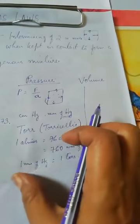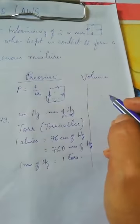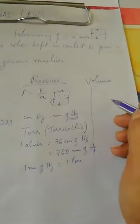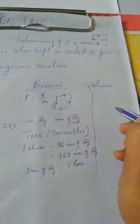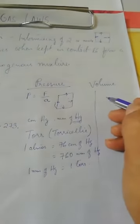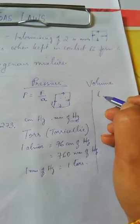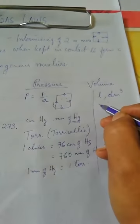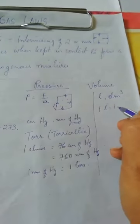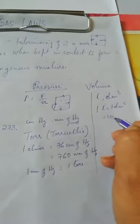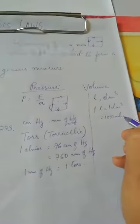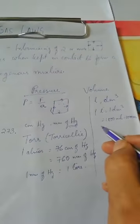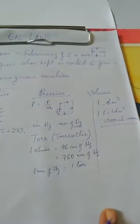Gases have indefinite expansibility and they occupy the entire volume of the container. The volume of a gas is the space occupied by a fixed mass of gas. Its units are liters, where 1 liter equals 1 decimeter cube, which equals 1000 milliliter, which equals 1000 centimeter cube. You may be asked in one unit and required to convert it to another.